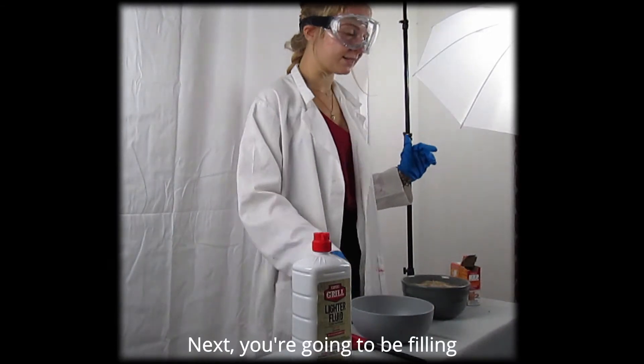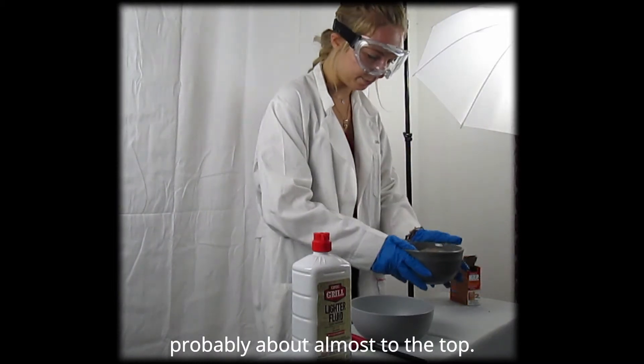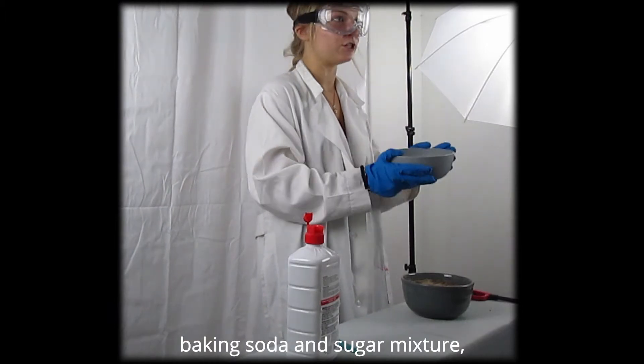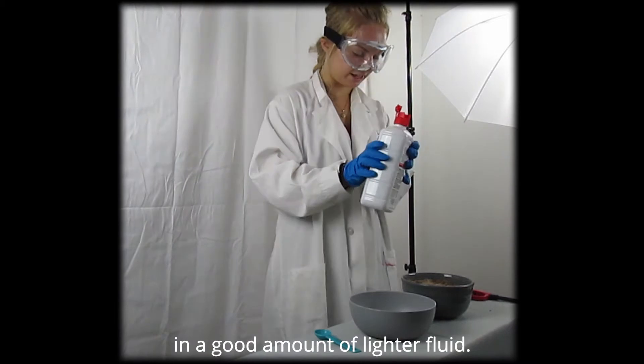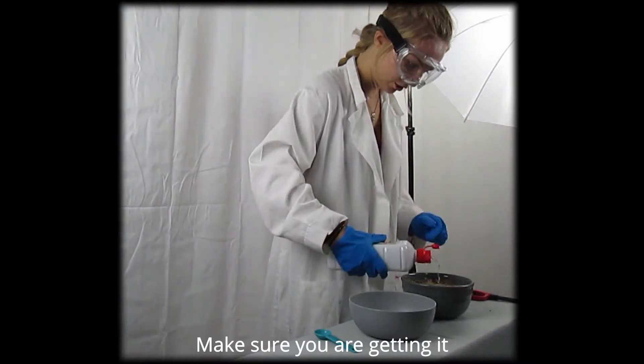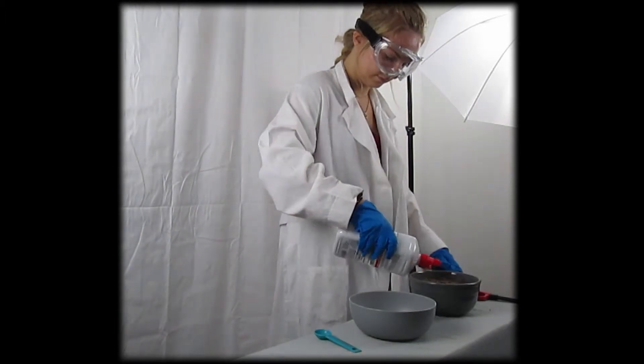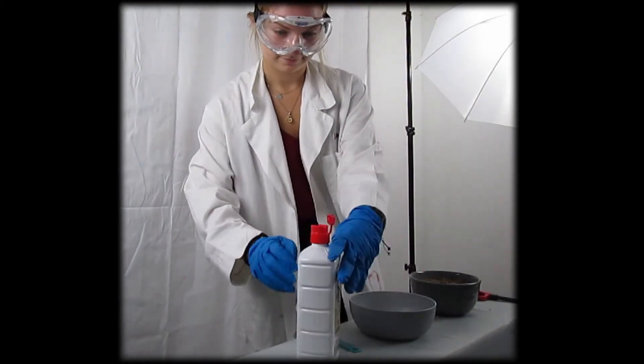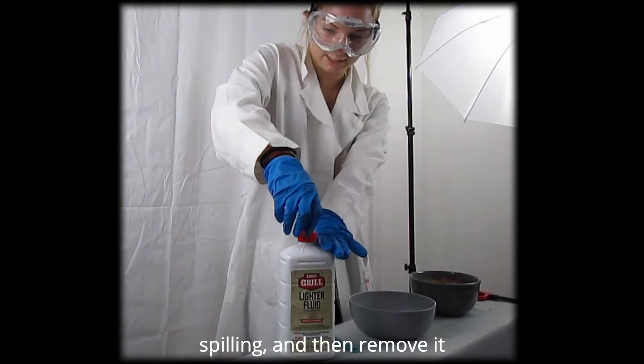Next, you're going to be filling a bowl that is fire safe with sand, probably about almost to the top. Now that we've got our baking soda and sugar mixture, we are ready to douse the sand in a good amount of lighter fluid. Make sure you are getting it all over the sand. We're going to make sure to put the cap back on so that we don't have to worry about spilling.